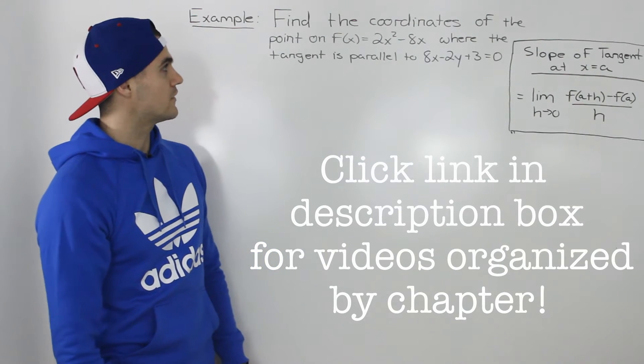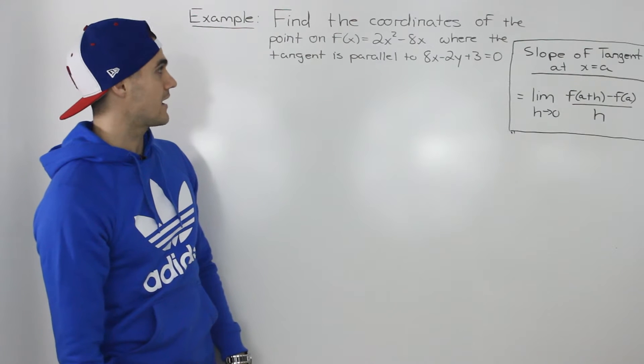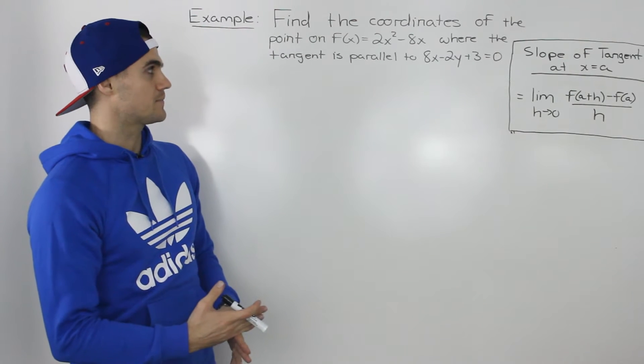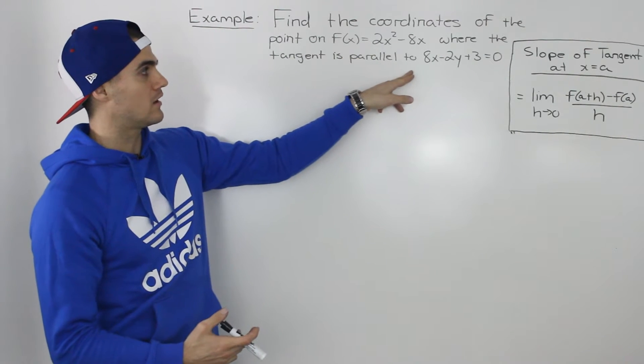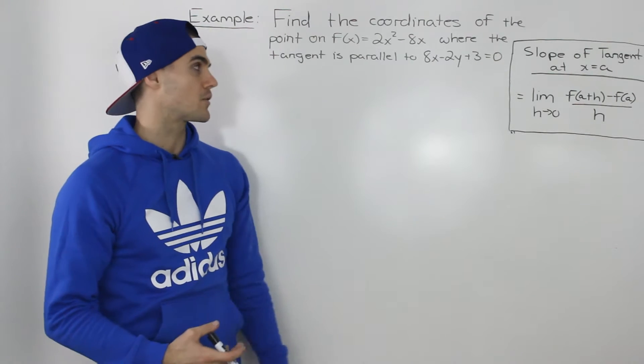Moving on to the next example, we have to find the coordinates of the point on the function f(x) = 2x² - 8x where the tangent on that function is parallel to 8x - 2y + 3 = 0.